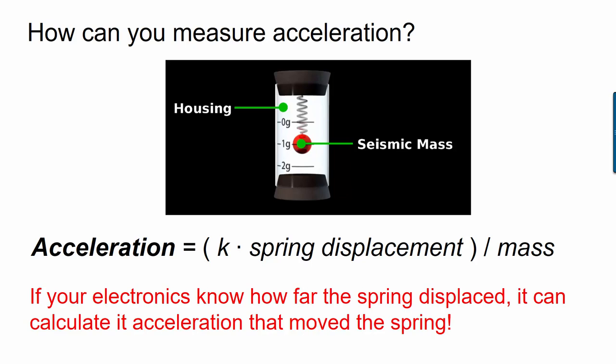But remember, all of this is happening inside a tiny chip. You have to somehow measure how far this tiny spring is being displaced, and if you can do that, then the chip can calculate the acceleration that moved that spring. That acceleration should be the same as the acceleration of your entire device, because the spring is mounted inside your device.